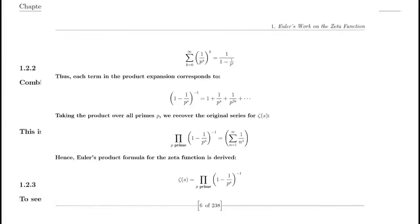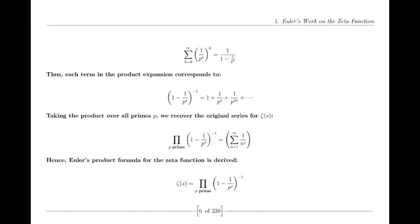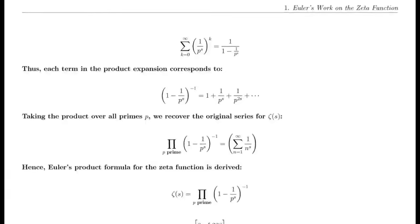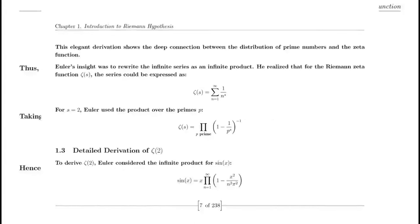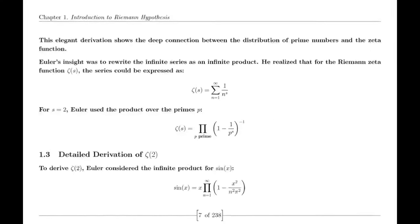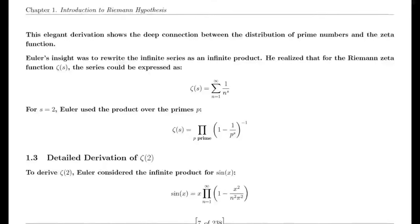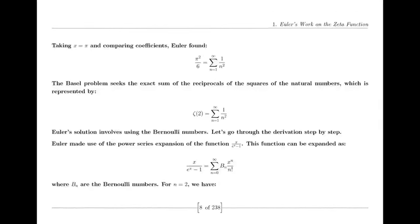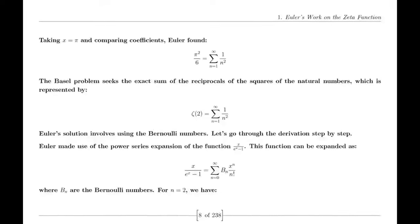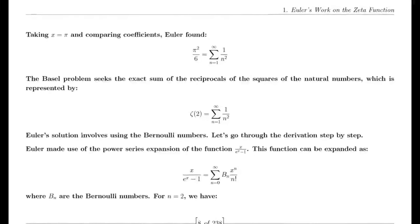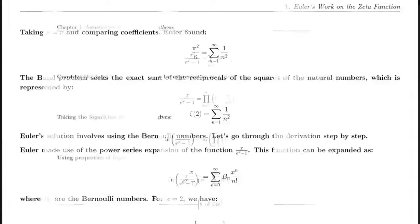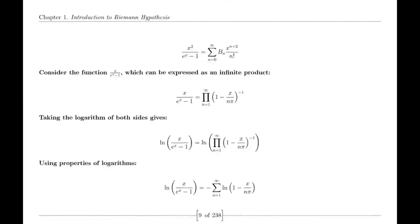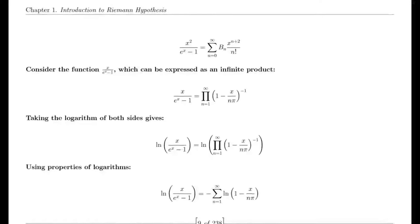He combines insights from his accounting expertise with concepts from analytic number theory, piecing together a framework that seems to illuminate the shadows surrounding the zeta function's zeros. After months of diligent work, Suraj crafts a proof that he believes could finally resolve the long-standing conjecture. With a mix of excitement and trepidation, he decides to share his findings with the world, creating a YouTube video presenting his proof in a clear and engaging manner, appealing to both laypeople and mathematicians alike.